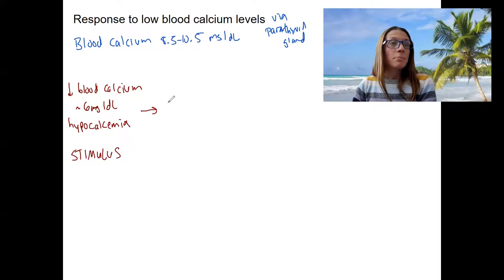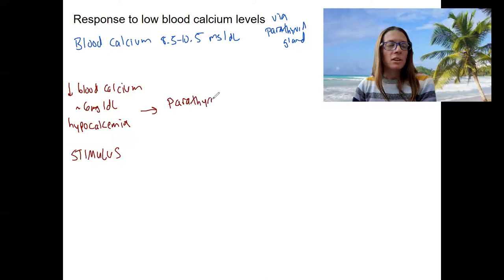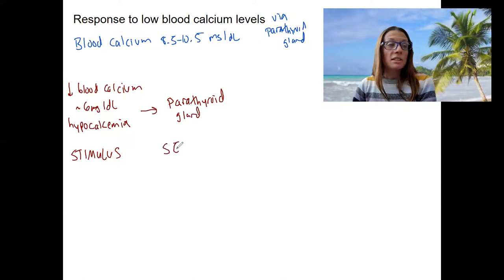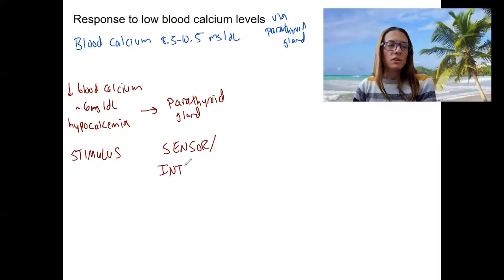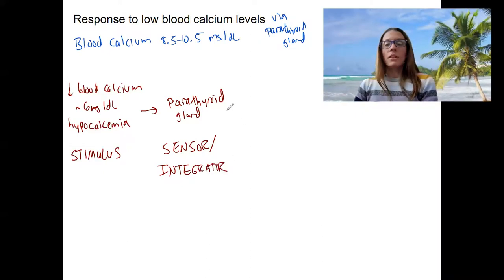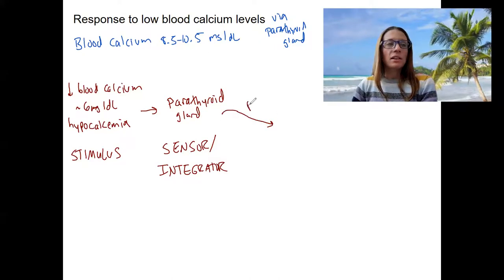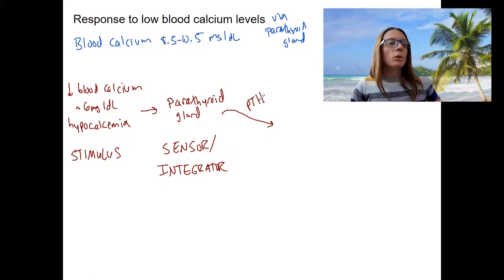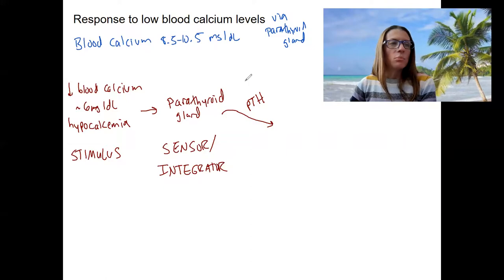This stimulus is going to be detected by our endocrine organ in this case, the parathyroid gland, which is going to be both our sensor or receptor and our integrator or control center. The parathyroid gland is going to have an output signal. What is that output signal? A hormone. Parathyroid hormone produced by the parathyroid. This is our output signal.